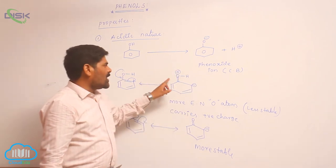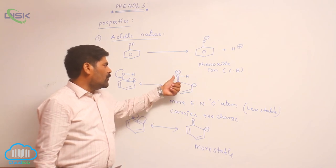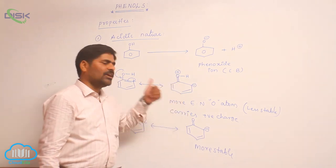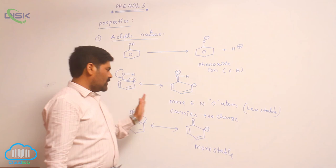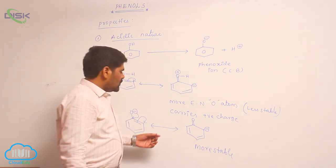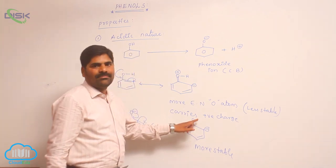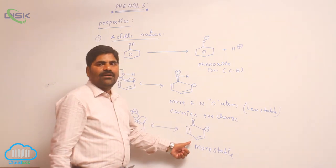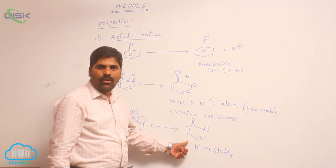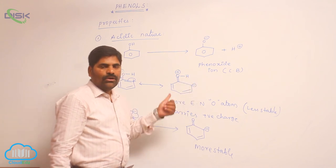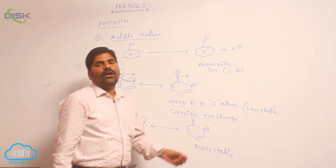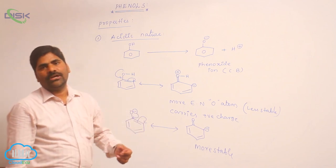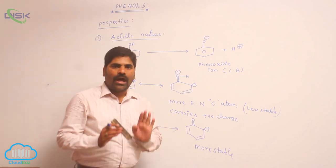Whenever proton is present in phenol, the more electronegative oxygen carries charge. When removal of proton, the more electronegative oxygen has no charge. So, that is the reason why these resonating structures are more stable when compared to this. To get stability, phenol loses its proton easily to form phenoxide ion.